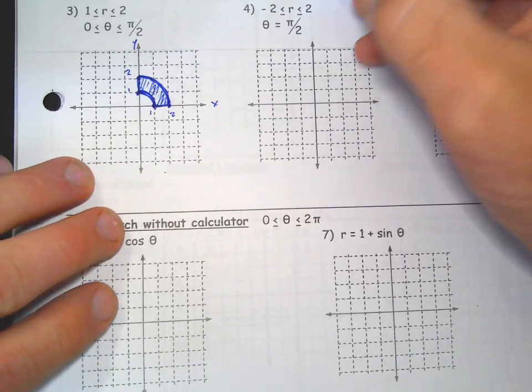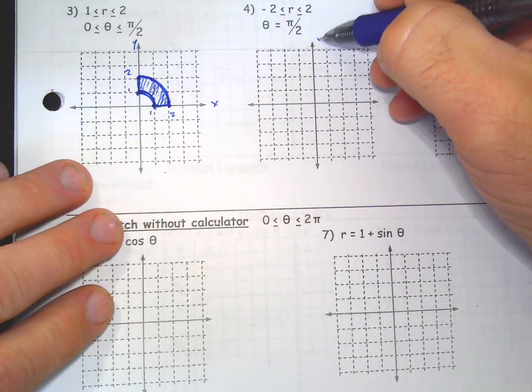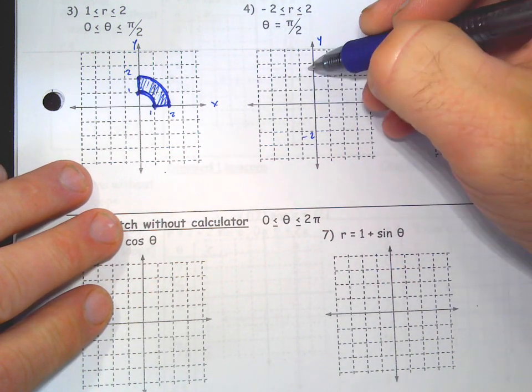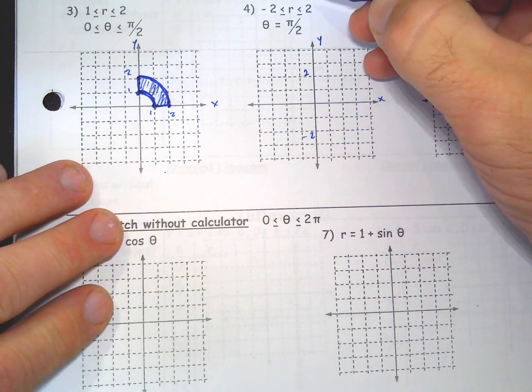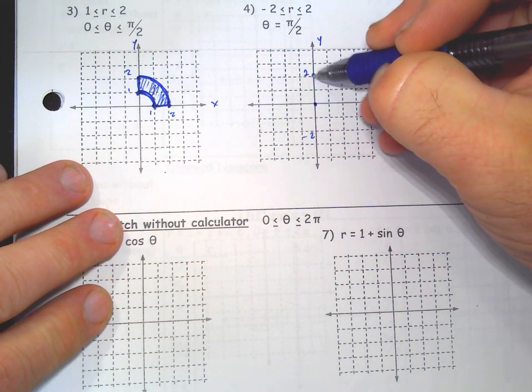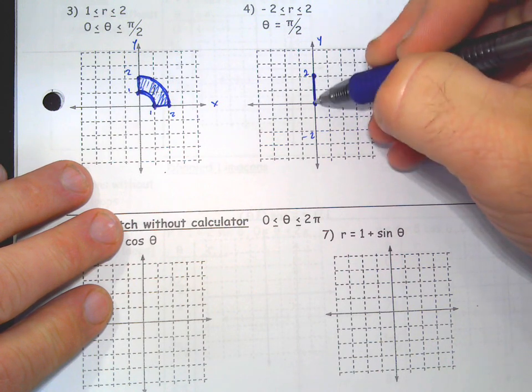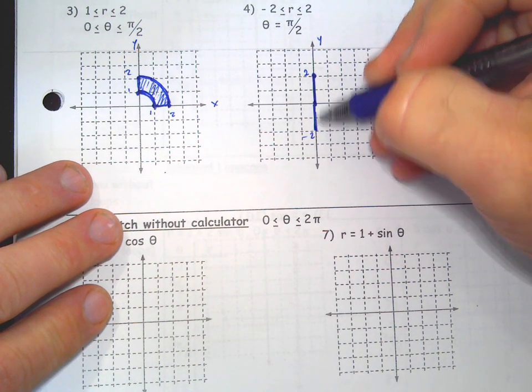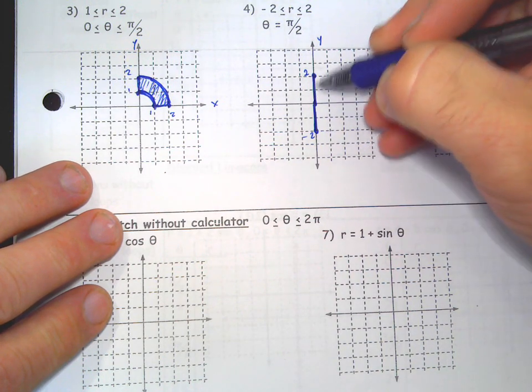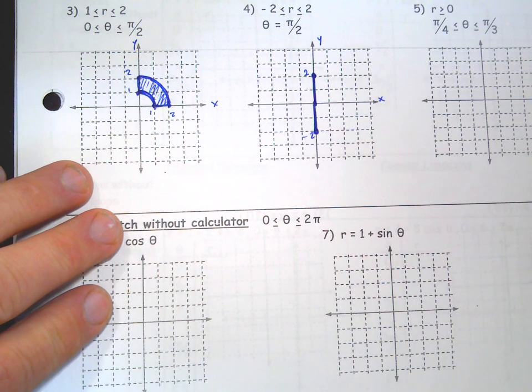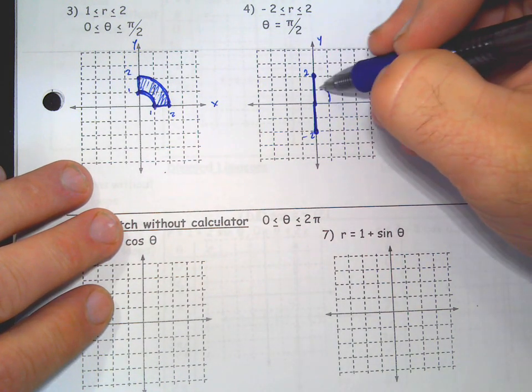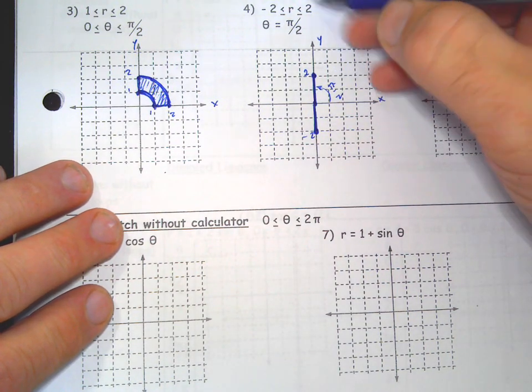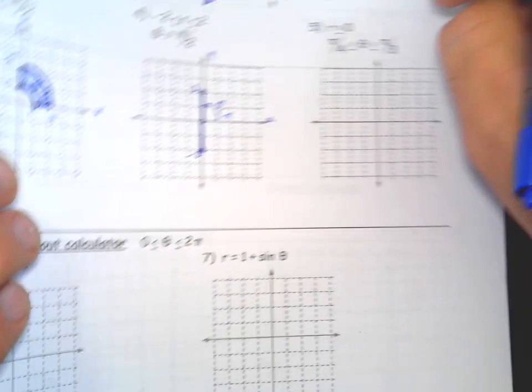Okay, next one. The angle is always pi over 2, which is right here. But the radius only goes from negative 2 to positive 2. Now, from 0 to positive 2, that would be this line segment. But because we have negative radius, that means we get the radius behind it. So it's a line segment. So it ends at those dots. Right? And that's pi over 2. So the 2 and the negative 2 don't have to do with y values. Those are radius. Those are values of radius.